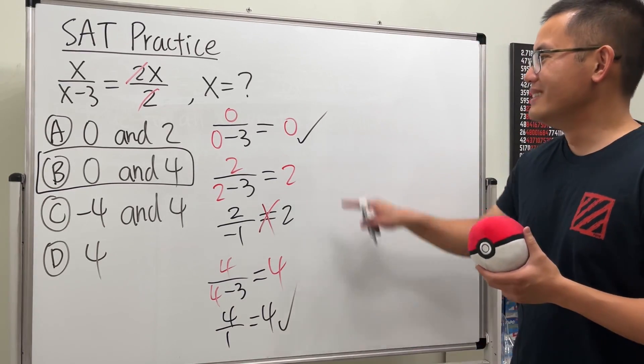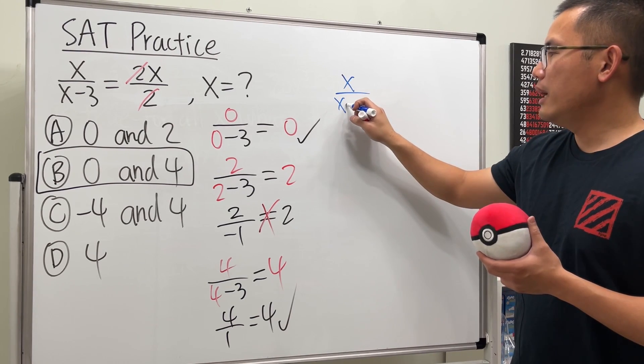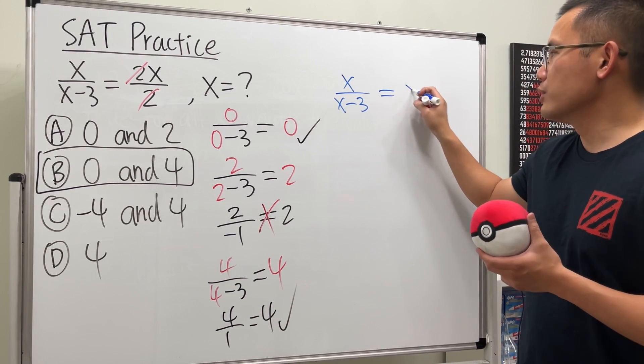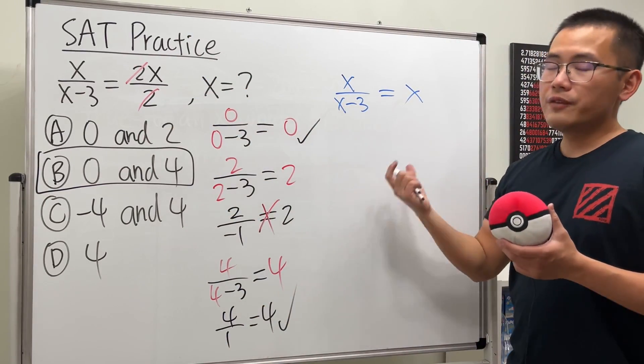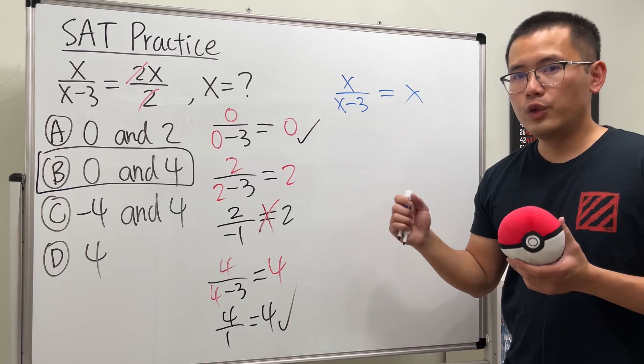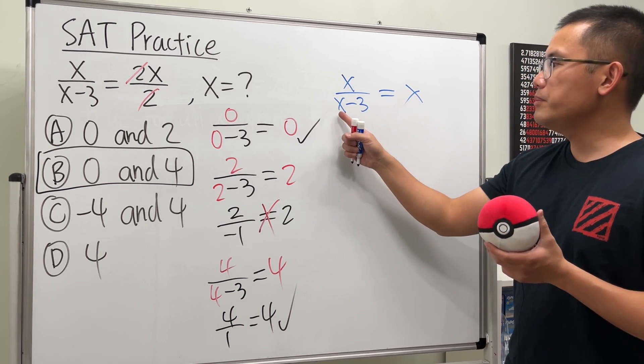Take a look, right there we have x over x minus three, and this is seriously just equal to x, just cancel the two. When we are solving a rational equation like this you want to get rid of the denominator first. Here is the denominator, namely the x minus three.